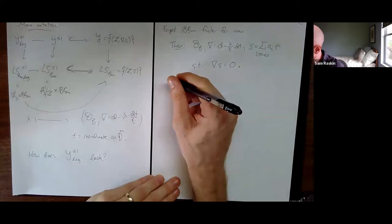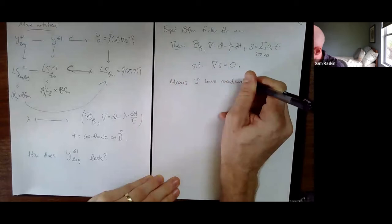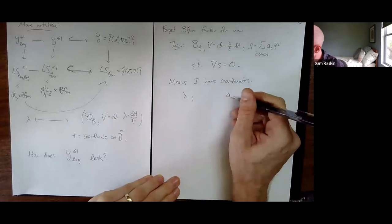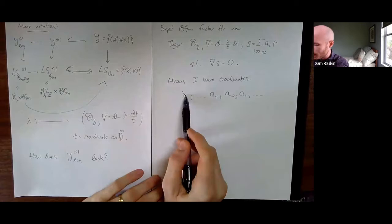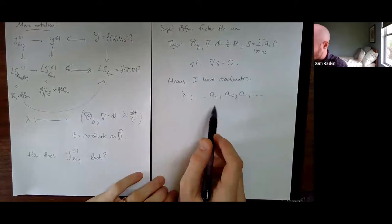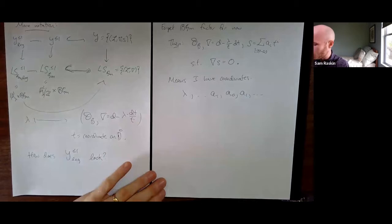Let's unwind what that means. I have coordinates λ and then infinitely many a_i's: a_0, a_1, a_{-1}. The function λ on a point is pulling out λ — that term of the connection. The function a_0 is pulling out a_0, the zeroth Laurent coefficient of my flat section. A naive condition is that a_{-i} equals zero for i sufficiently large — so on any given Laurent series, the tail to the left is zero. This is a kind of ind-scheme style condition.